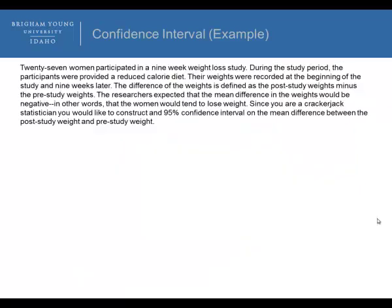So the next example here: 27 women participated in a nine-week weight loss study. During the study period, the participants were provided a reduced calorie diet. Their weights were recorded at the beginning of the study and nine weeks later. The difference of the weights is defined as the post-study weights minus the pre-study weights. The researcher expected that the mean difference in the weights would be negative, in other words, that the women would tend to lose weight. Since you are a crackerjack statistician, you would like to construct a 95% confidence interval on the mean difference between the post-study weight and the pre-study weight.